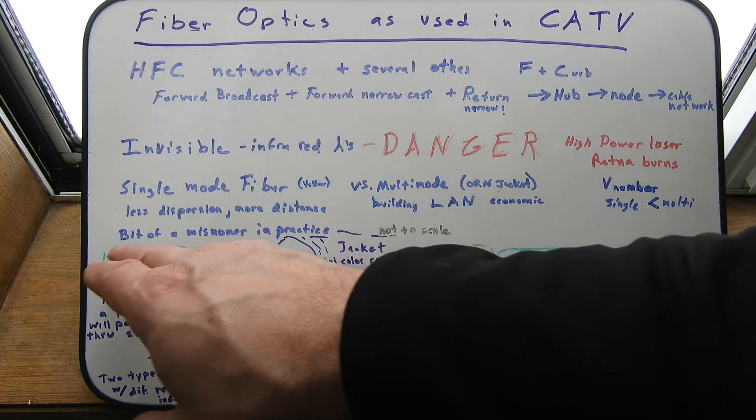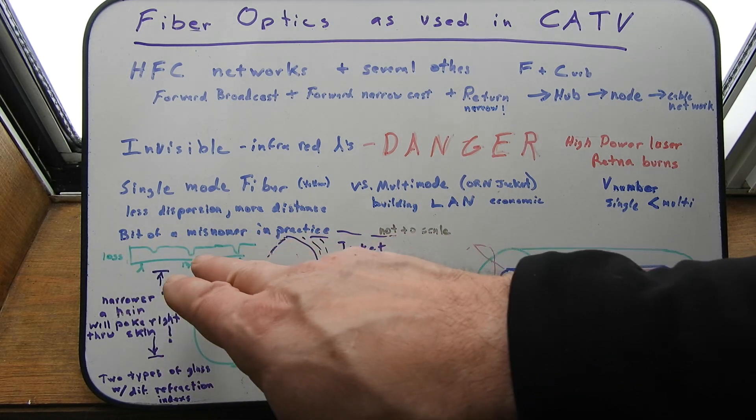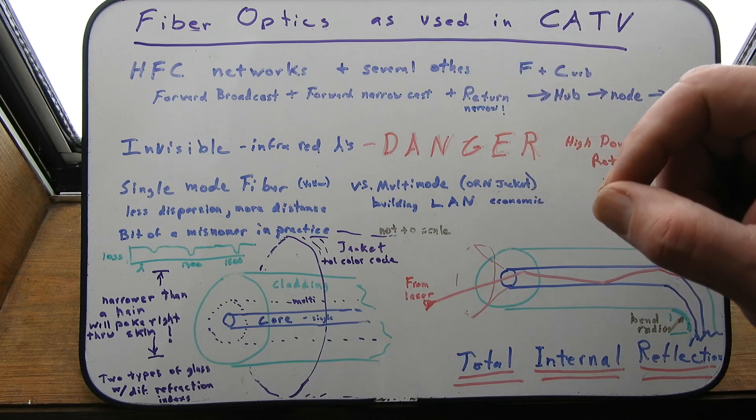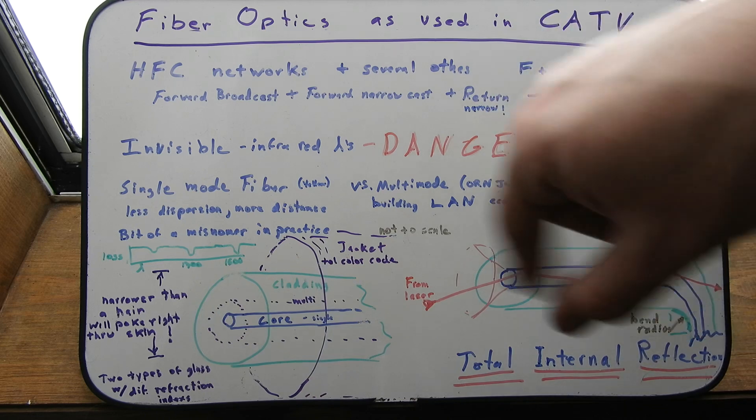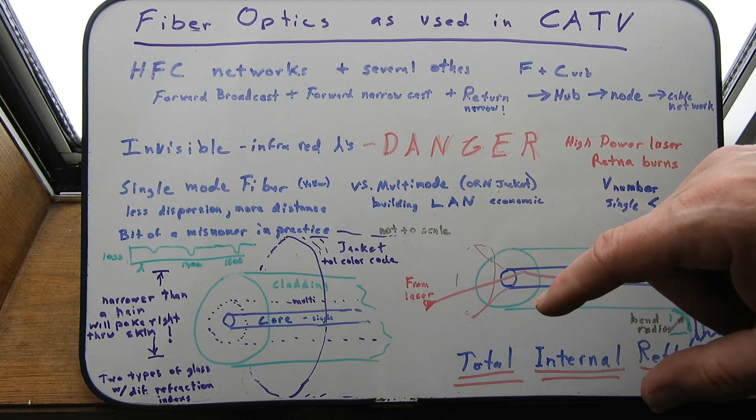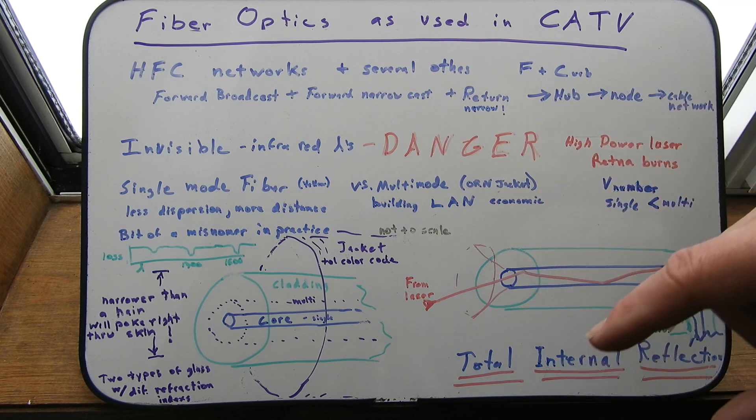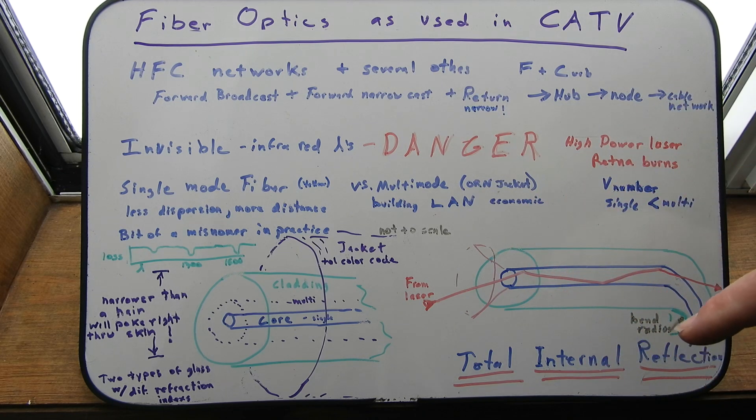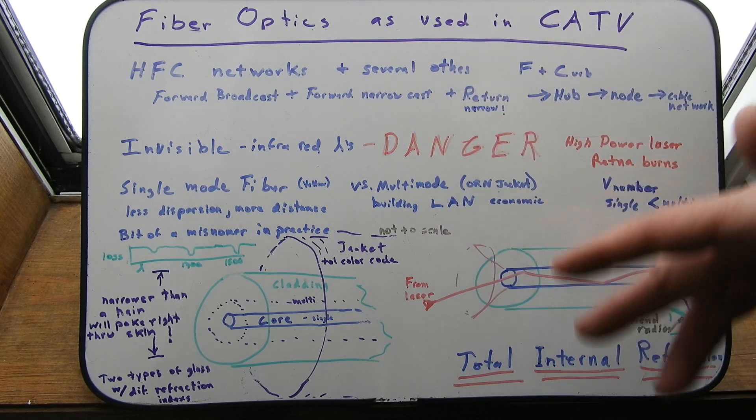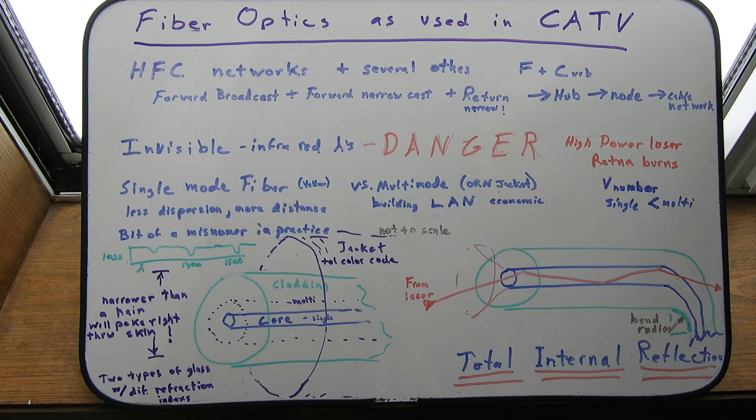So you can use these sweet spots and there's more than one sweet spot is what I'm trying to tell you. But we mainly use the one around 1,300 and one around 1,600 is our sweet spot. And you can actually have many different lights, many different signals independent of each other on the fiber. And even one signal on a fiber, just one forward signal with nothing else in that fiber, say it's an AM modulated fiber, can carry the whole span of the cable channels all in one fiber easily. And a lot more.